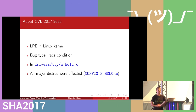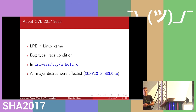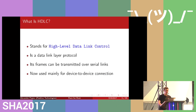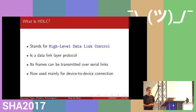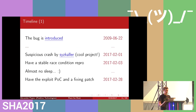This vulnerability is a local privilege escalation flaw in the Linux kernel. It has a race condition in the NHDLC kernel driver, provided by all major distros as a loadable kernel module, which is why all major distros were affected. This driver supports the line discipline for the TTY subsystem, which supports the high-level data link control protocol. Its frames can be sent via serial lines and it's mainly used for device-to-device communication. This bug was introduced in 2009.